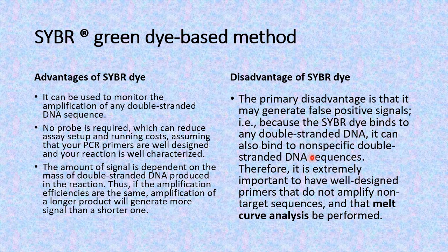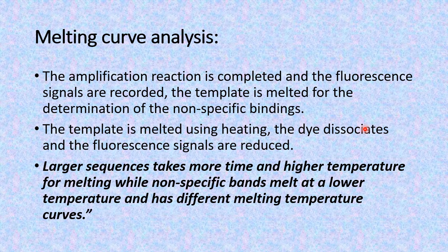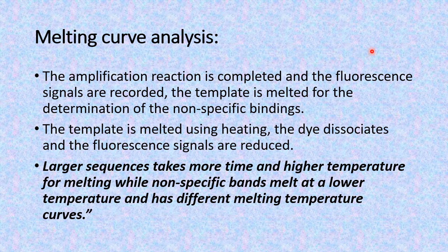The primary disadvantage of this system is that it may produce false positive signals, because it can bind to any double-stranded DNA — even to non-specific double-stranded sequences. In order to mitigate this disadvantage, melt curve analysis is performed. In melt curve analysis, the amplification reaction is completed and the fluorescence signals are recorded — meaning all the amplicons in the system are in the form of a duplex molecule. For melt curve analysis, the templates are again denatured, because the objective is to determine the non-specific bindings of this dye.